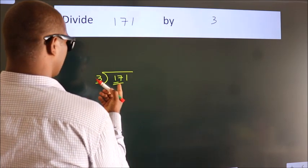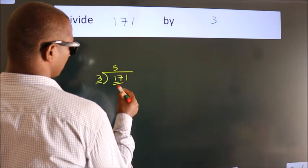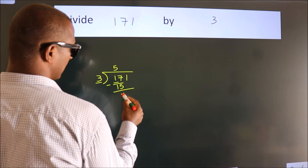A number close to 17 in the 3 table is 3 fives, which is 15. Now we should subtract. We get 2.